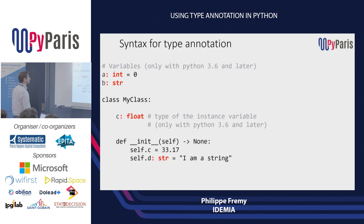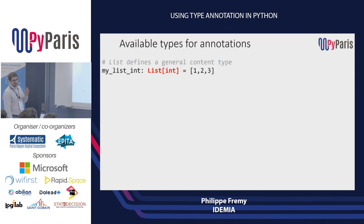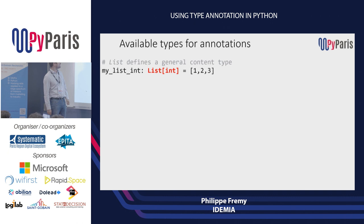Now you've got the basic types that you can annotate with, and you've got some more elaborate types. If you want to say something is going to be a list, you use a slightly unusual syntax: capital-L List, square bracket, then the type. This specifies a list containing integers, for example. This List type is imported from the typing module.